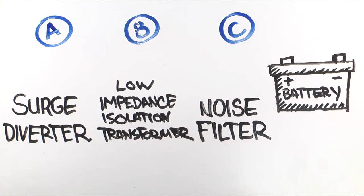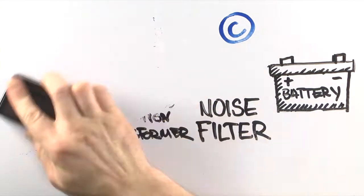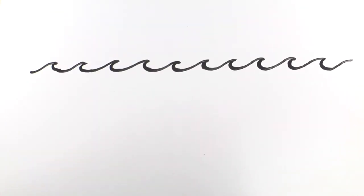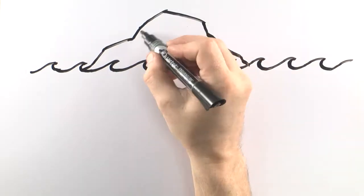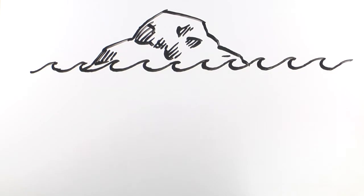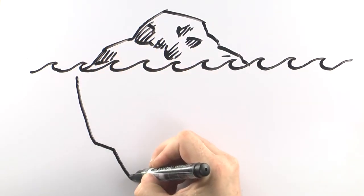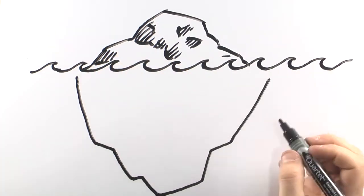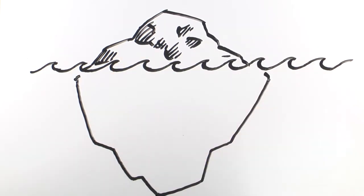You need a solution that incorporates a low impedance isolation transformer. Think of these issues like an iceberg. It's not the obvious things, like power outages, lightning, and so on, that cause the most amount of damage. It's what's below the water, which you don't see, like those day-to-day power disturbances that are the most destructive.